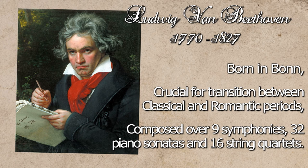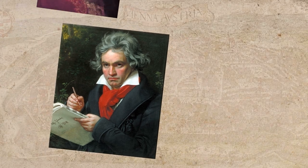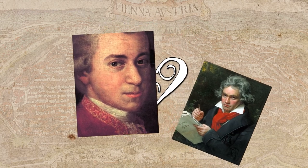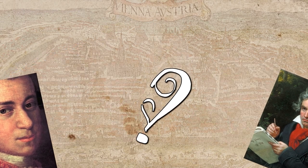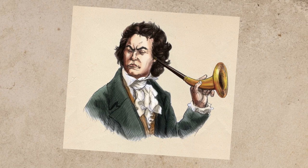Beethoven created plenty of recognizable pieces, including nine symphonies, 32 piano sonatas, and 16 string quartets — and that's just the recognizable works. Most of his early works were created very much in the style of Mozart, and in 1787 he was sent to Vienna to study under him, although it's a matter of some speculation whether or not they ever actually met.